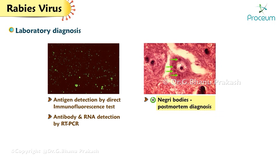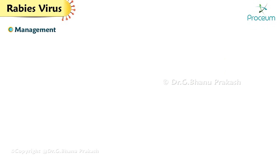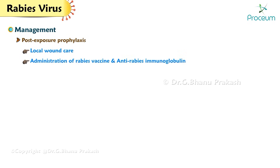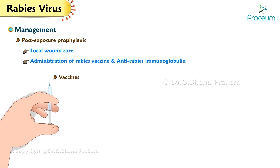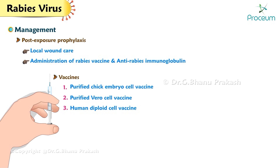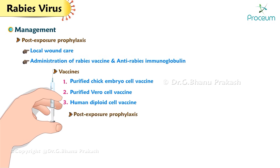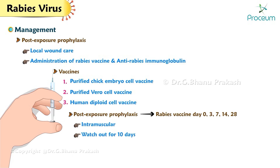Management: Post-exposure prophylaxis consists of local wound care and administration of rabies vaccine and anti-rabies immunoglobulin. Vaccines available for rabies are: (1) purified chick embryo cell vaccine, (2) purified Vero cell vaccine, and (3) human diploid cell vaccine. Post-exposure prophylaxis is given on days 0, 3, 7, 14, and 28 intramuscularly, and the animal should be watched for 10 days.